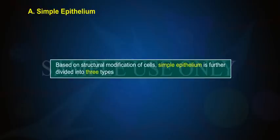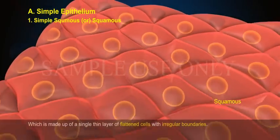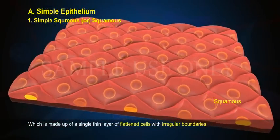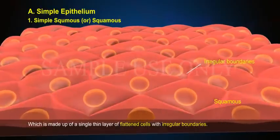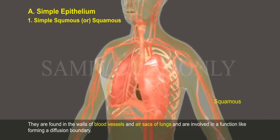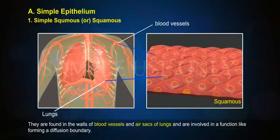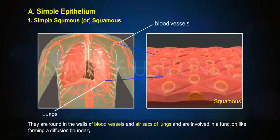Simple epithelium. Based on structural modification of cells, simple epithelium is further divided into three types. 1. Simple squamous epithelium, which is made up of a single thin layer of flattened cells with irregular boundaries. They are found in the walls of blood vessels and air sacs of lungs, and are involved in forming a diffusion boundary.